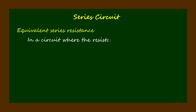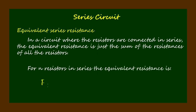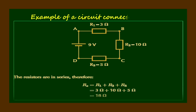Let's define the equivalent resistance in a series circuit. In a circuit where the resistors are connected in series, the equivalent resistance is just the sum of the resistances of all the resistors. For n resistors in series, the equivalent resistance is R sub S equals R1 plus R2 plus R3 plus R sub n. Here's an example: the resistors are in series, therefore R sub S equals 3 ohms plus 10 ohms plus 5 ohms, and the equivalent resistance is 18 ohms.